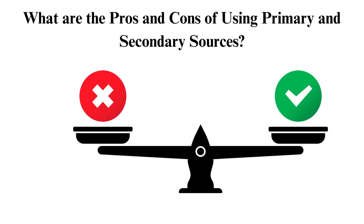Pros of secondary sources: helps you get background information on the topic, supports or contrasts your arguments with other research, helps in gathering information from primary sources that are hard to access, gives new understanding and insights into various topics, any person can collect data when doing research, and it's very easy to find these sources especially on the internet. Cons of secondary sources: sometimes may be biased especially if the researcher has personal interests, it's not timely as most sources use data from the past, and as a researcher you don't have control over the data quality since anyone can misinterpret it.